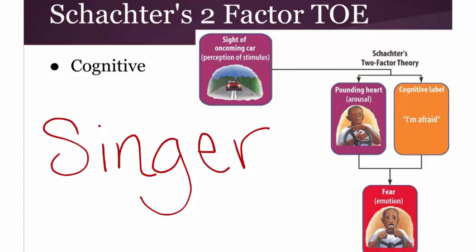To understand the Schachter two-factor theory, you need to know what the two factors are. Looking at the diagram and flowchart, the first factor is physiological arousal — we've seen that in all the theories. The second factor is something new: a cognitive label, meaning some interpretation of what's going on. When you have a stimulus — like an oncoming car, same as the previous examples — your body reacts, your heart starts pounding, you have physiological arousal.